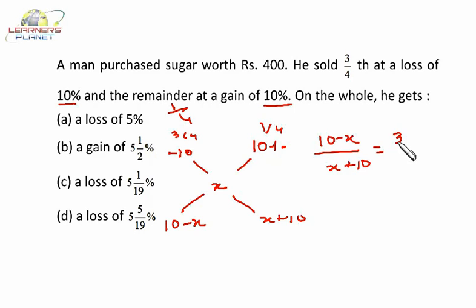Now let's calculate X. So it is 10 minus X equals 3X plus 30.